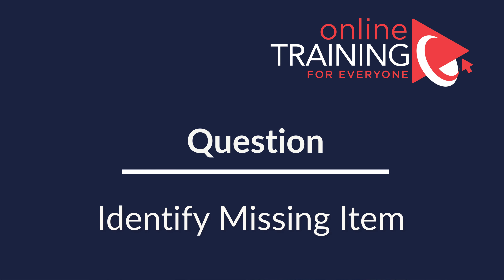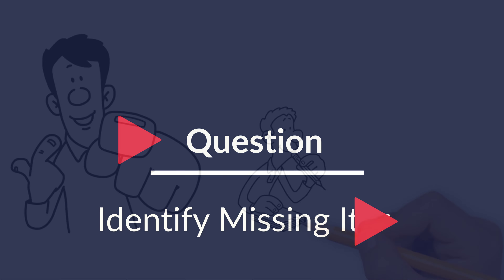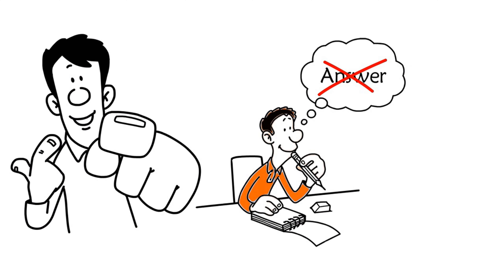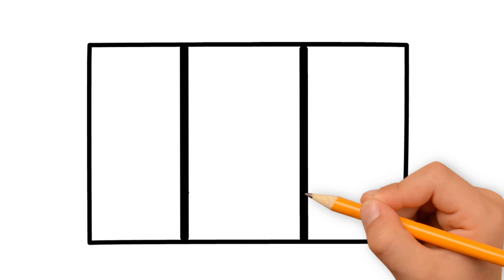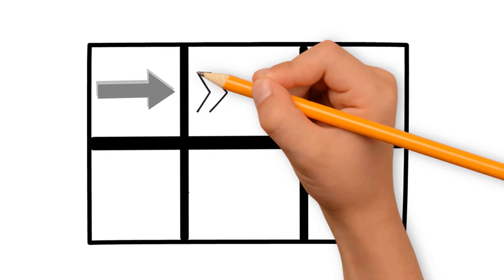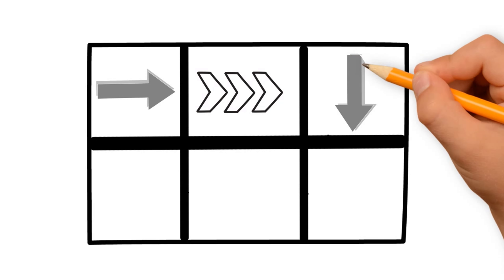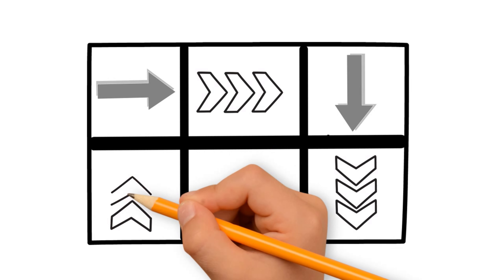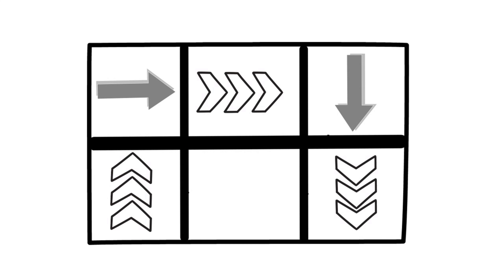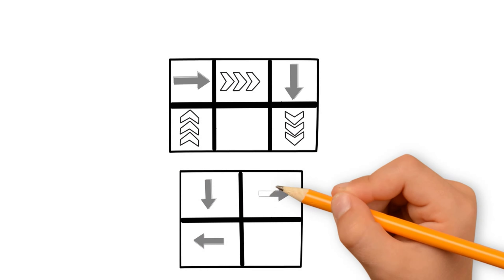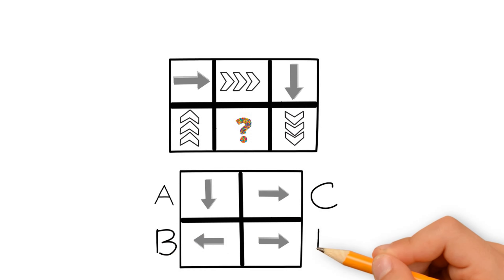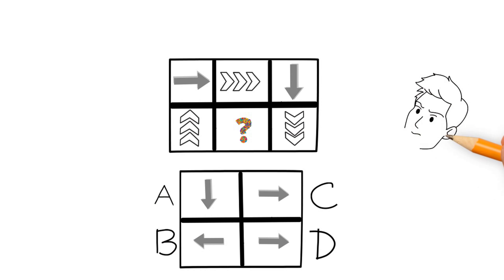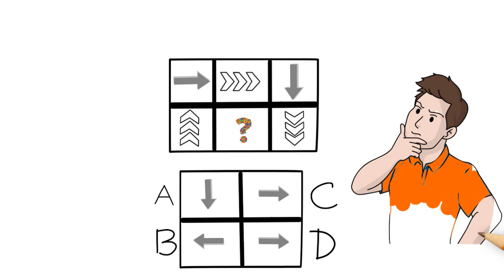I'm excited to share with you a cool question which is easy to understand but doesn't have an obvious answer. You're presented with a 2x3 matrix that has arrows inside. There are two types of arrows: solid arrows and arrows that consist of three different shapes. There are six possible spaces, five shapes are present and one is missing. You're presented with four choices — A, B, C, and D — to identify the missing shape highlighted by the question mark. Give yourself 10 to 15 seconds to see if you can identify the right answer.